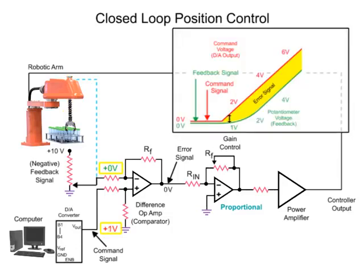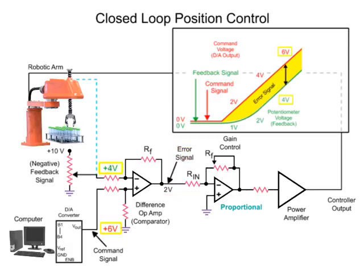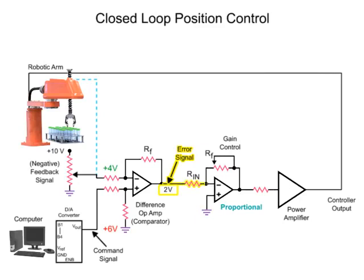In this system, there is not an immediate response by the robotic arm to the command signal. The delay of the arm and feedback signal creates a positive error signal voltage at the output of the difference op-amp. The error signal is inverted by the proportional difference op-amp to a negative voltage, which is then amplified by the power amp and inverted to a positive voltage and applied to the motor of the robotic arm.